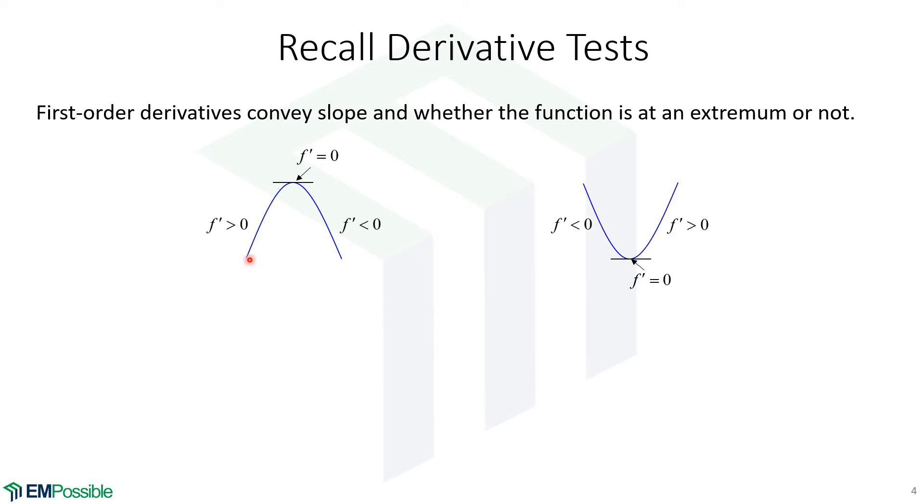Now, of course, when the function's increasing, our slope is positive. When it's decreasing, our slope is negative. So the first derivative test can locate extremums, but it can't be used too easily to figure out whether that's a minimum or a maximum.